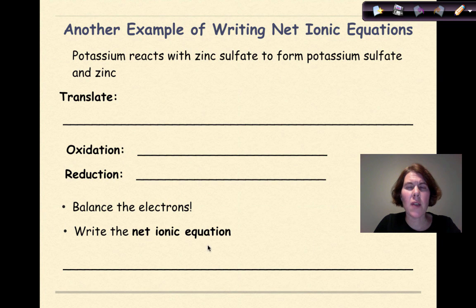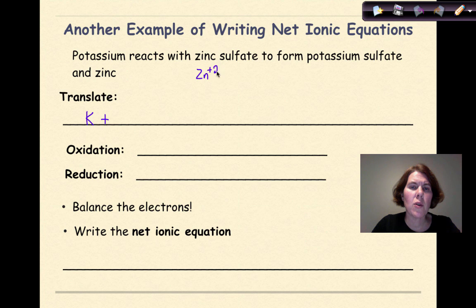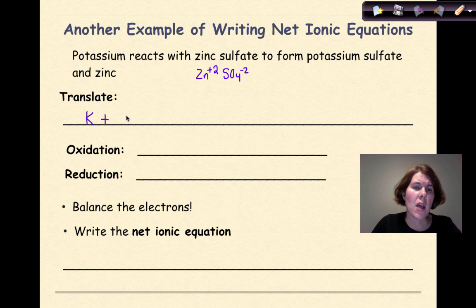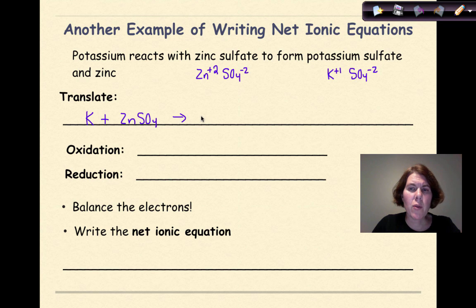Let's do another example of writing a net ionic equation, and this time we're going to start with a word equation: potassium reacts with zinc sulfate to form potassium sulfate and zinc. Potassium is K; reacts with is a plus sign. Zinc is Zn, and when it's part of a compound it's plus 2. From table E, sulfate is SO₄⁻². These two charges cancel each other out, giving ZnSO₄. To form is an arrow. For potassium sulfate: potassium is K⁺¹, sulfate is SO₄⁻², so crossing down gives K₂SO₄. And finally, plus Zn.